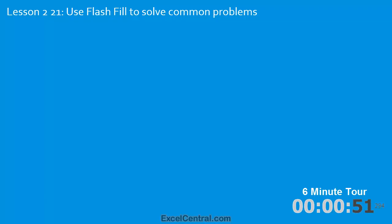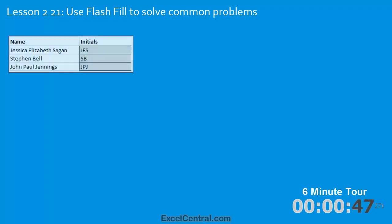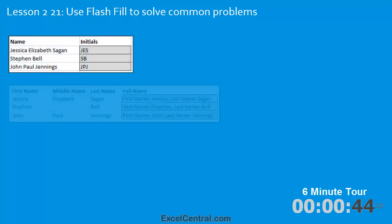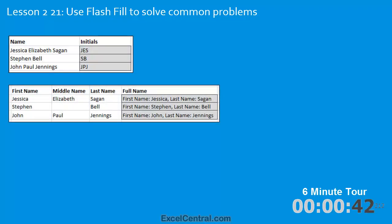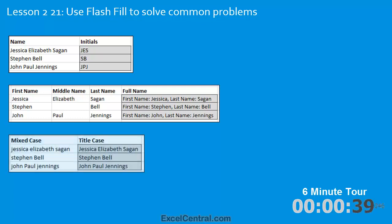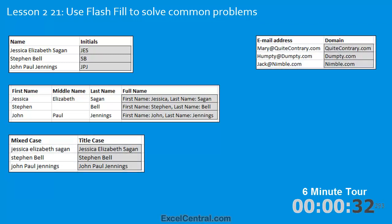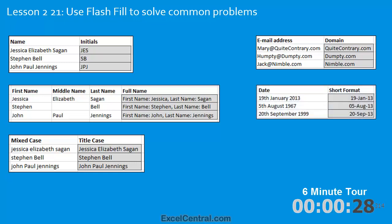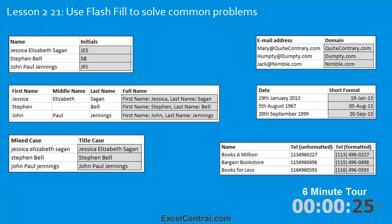In the twenty-first lesson we'll look at some common business problems Flash Fill can be used to solve. We'll generate initials from a full name, generate a full name from first, middle, and last name with extra text added, create title case from mixed case, remove the domain name from an email address, and use Flash Fill to format dates and telephone numbers. There are a huge number of other examples of how Flash Fill can solve everyday business problems.